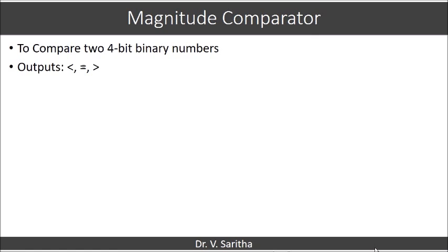The input of this circuit will be 8 bits, wherein 4 bits will be one number and another 4 bits will be the other number. The outputs of this circuit will be less than, equal to, and greater than. When we are comparing two numbers, we can give the relation as A greater than B, A less than B, or A equal to B.